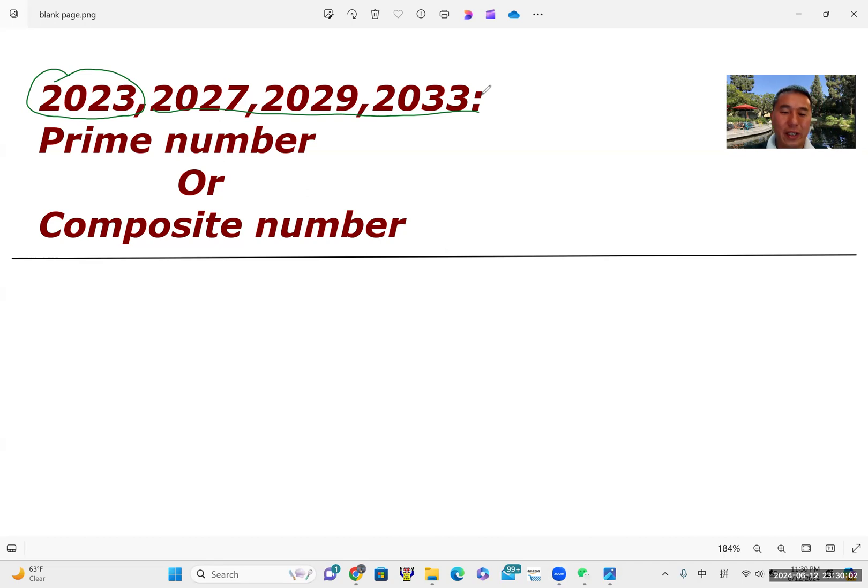Okay, quickly have the concept what means prime or composite number. Let me write. For example, prime means a number like five. You can just write as one times five. Or just one and five are a factor of five. For this kind of number, we call prime number.